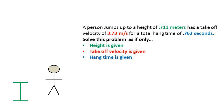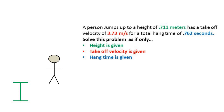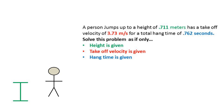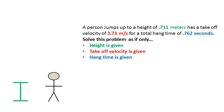A person jumps up to a height of 0.711 meters. This is the average height of a basketball player's jump, which is 28 inches in imperial. The person has a takeoff velocity of 3.73 meters per second and a total hang time of 0.762 seconds. We're going to solve the problem as if we only have height, takeoff velocity, and hang time.